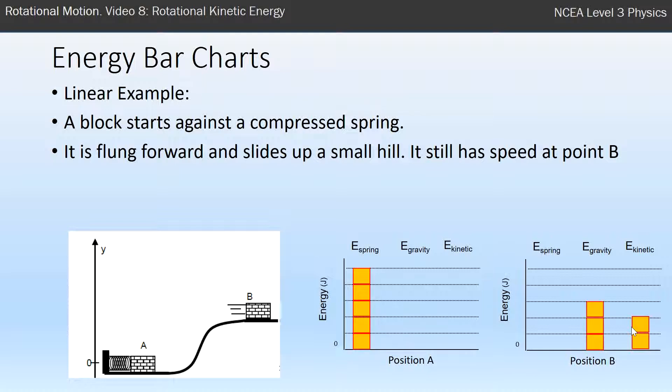So we can now write this as an equation. We've got spring energy here, and that got turned into gravitational and kinetic, and that's why we have spring equals gravitational plus kinetic. That is the point of these graphs, is to be able to pull an equation out of it.